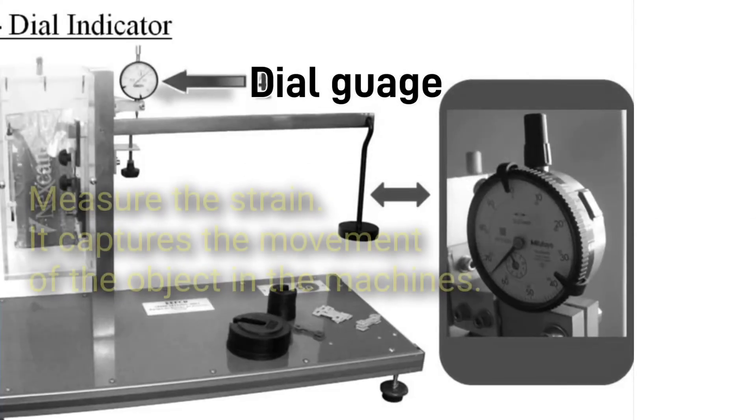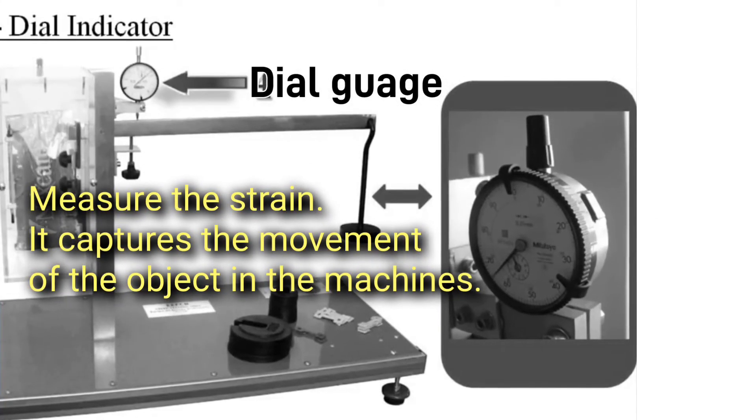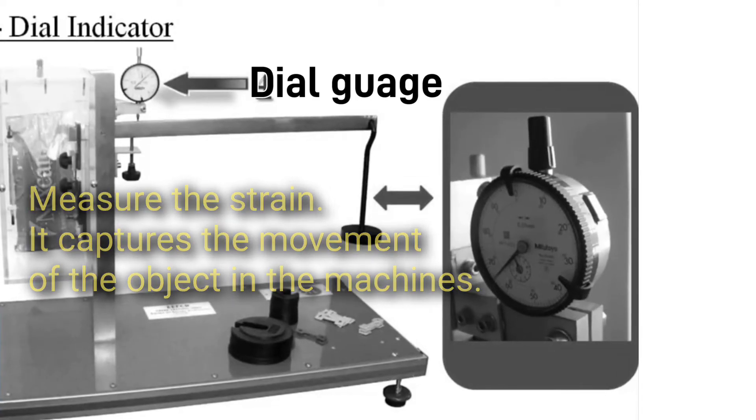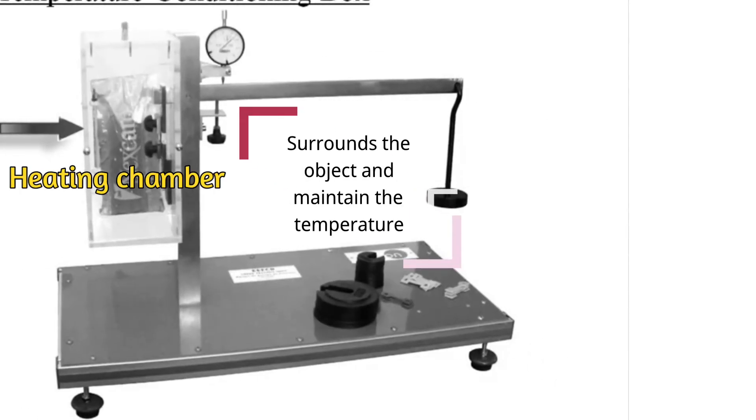Dial gauge is used to measure the strain. It is the object that captures the movements of the object in the machines. The load beam transfers the movement from the grips to the dial gauge. Heating chamber is what surrounds the object and maintains the temperature.